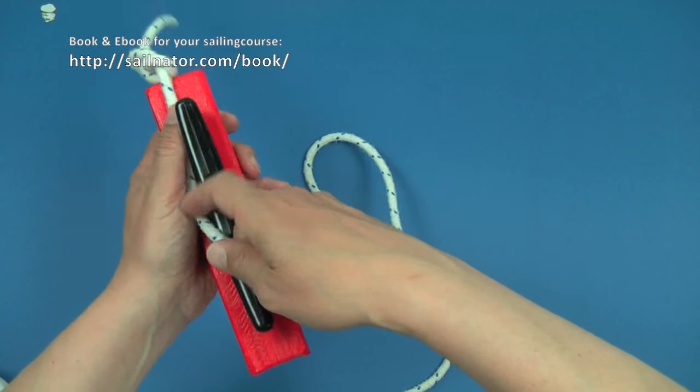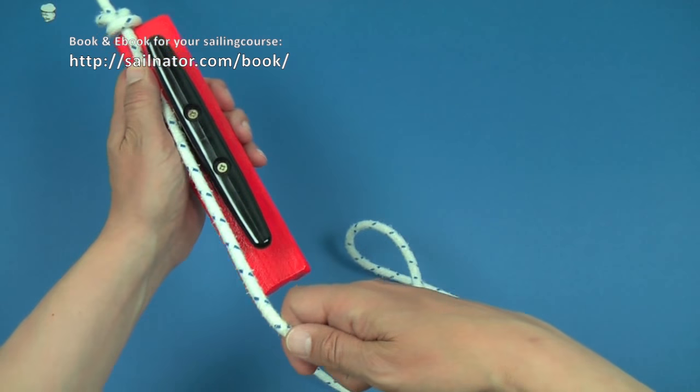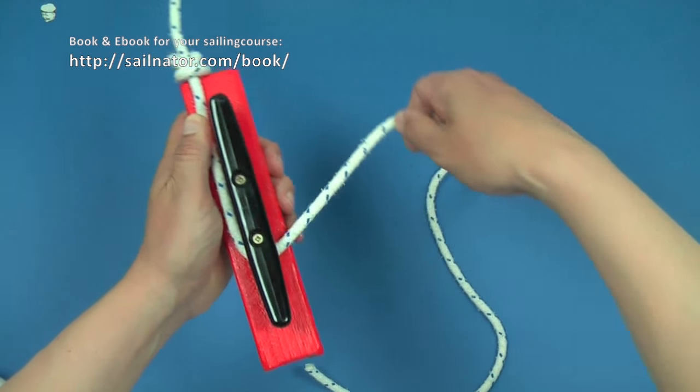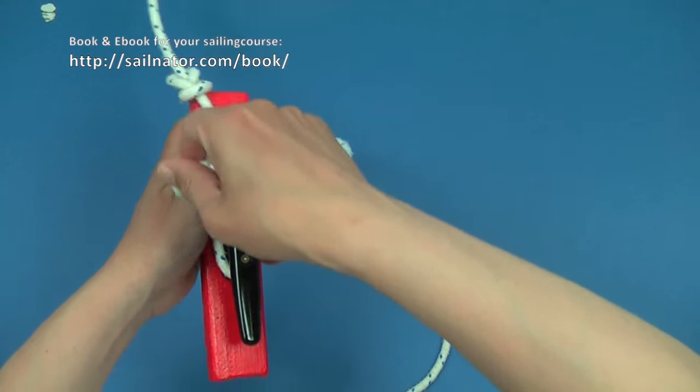I take the line in my right hand and put it once around the base of the horn cleat. From the side it looks like this.